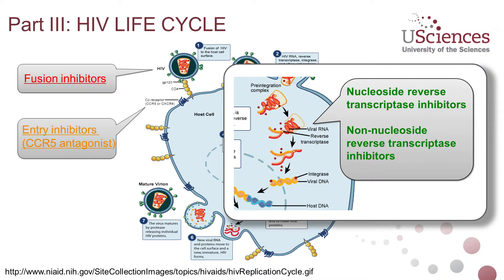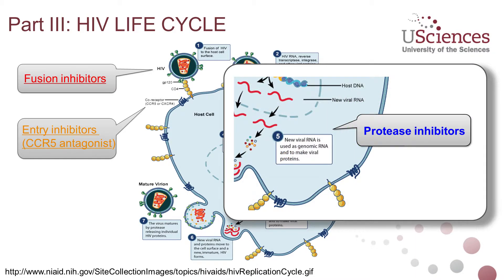Reverse transcriptase is very important for rewriting that RNA genetic material into DNA so that the organism can replicate. If it cannot rewrite the RNA as DNA, it cannot replicate. We have different groups of reverse transcriptase inhibitors, known as nucleoside and non-nucleoside inhibitors. Finally, we have a group called protease inhibitors.